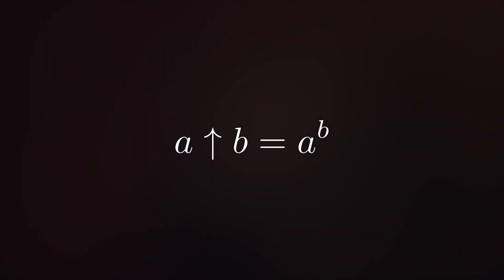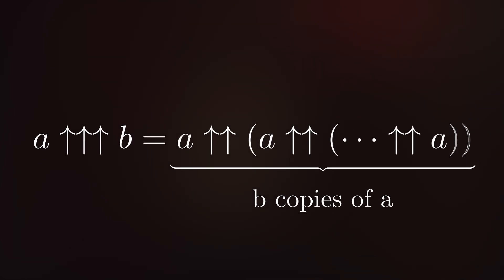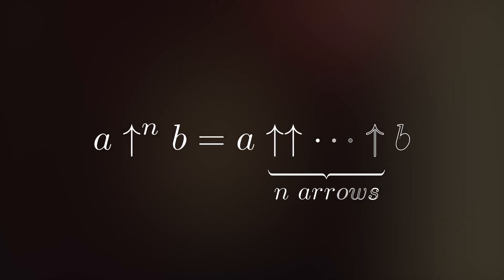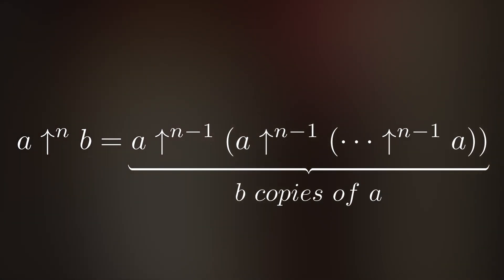Continuing further is difficult to visualize, so we use what's called up arrow notation. One up arrow represents exponentiation, and two up arrows represent tetration. Three up arrows represents repeated tetration, or pentation. We can also write up arrows with a superscript representing the number of up arrows, and n arrows represent b number of repeated n-minus-1 arrow operations.